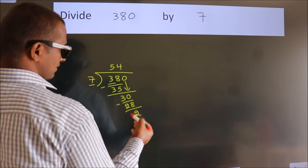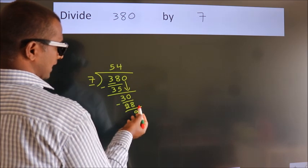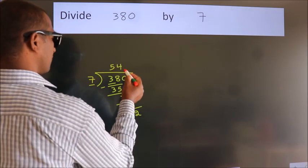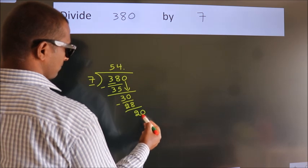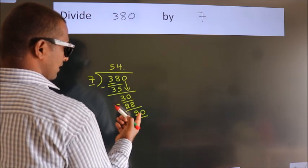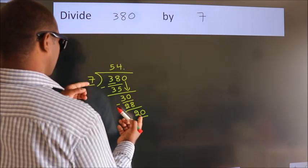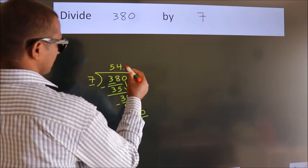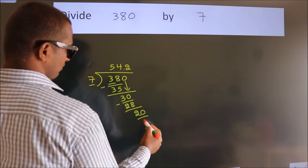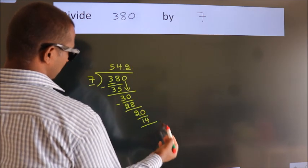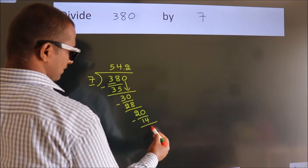After this, no more numbers to bring down. So what we do is, we put a dot and take 0. So 20. A number close to 20 in the 7 table is 7 twos, 14. Now we subtract. We get 6.